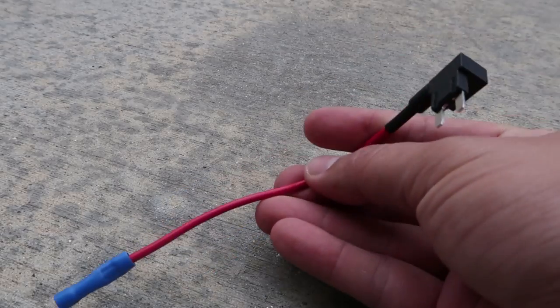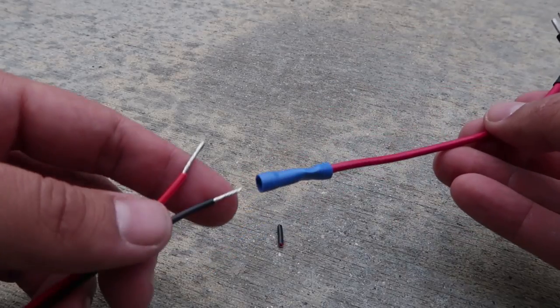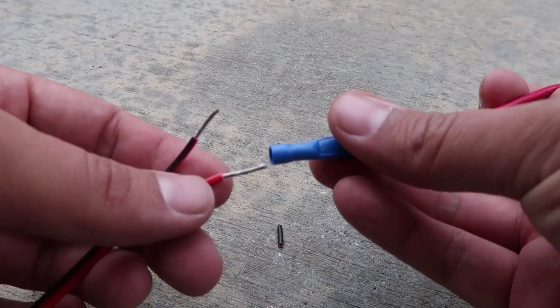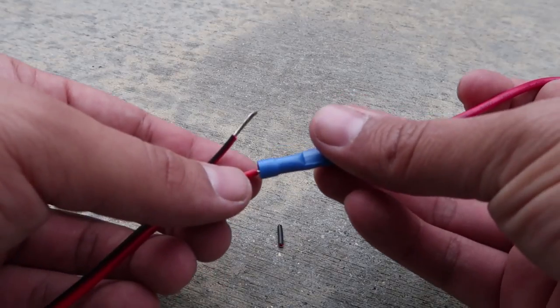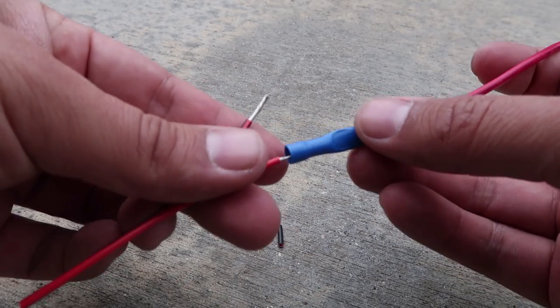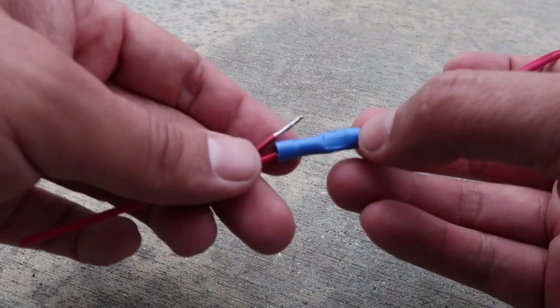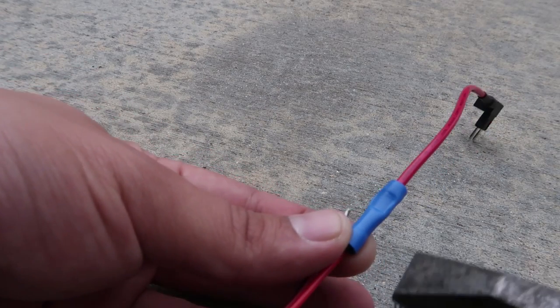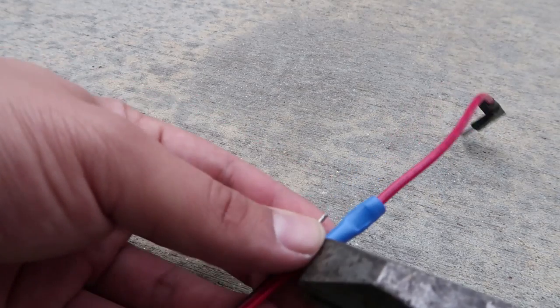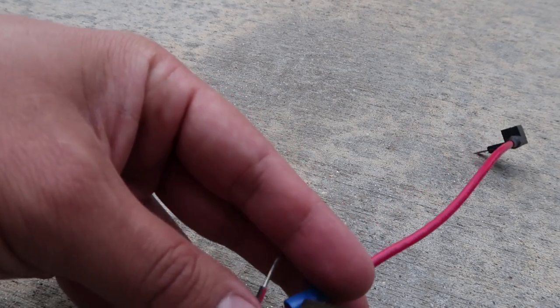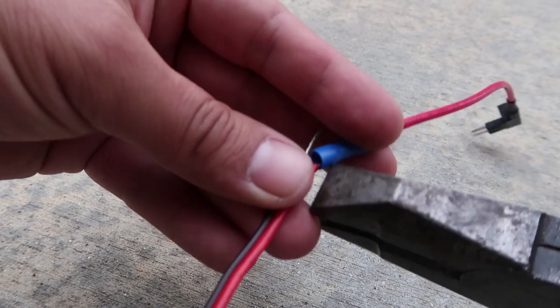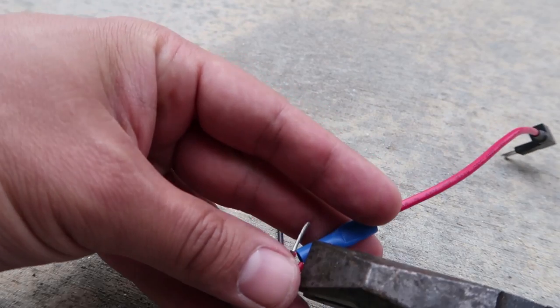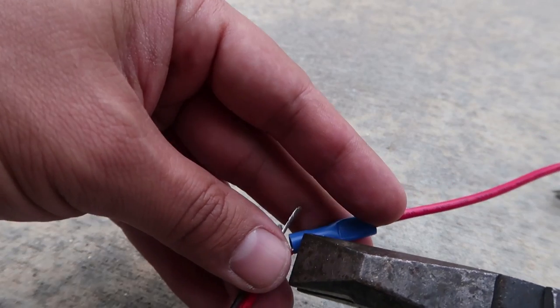From there we take the fuse tapper and the positive red cable and we put that into the crimp connector and make sure it's snug in there. Then we take our pliers and we crimp right here similar to the other side of the wire connector to close off and merge the two wires.